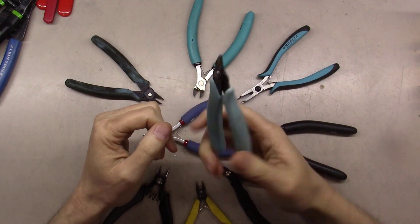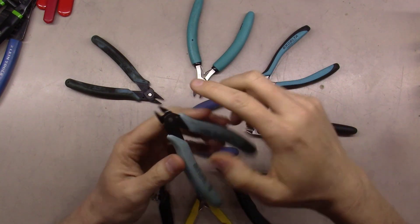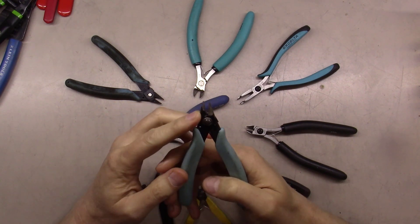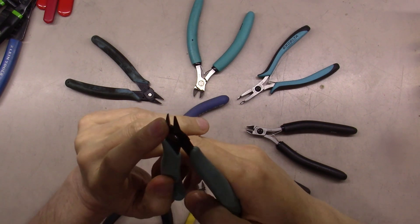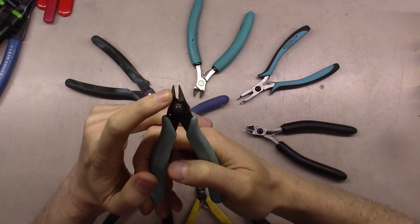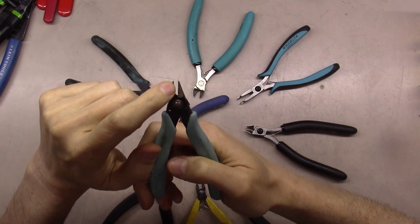You actually see these a lot on the used market. Matter of fact, at ham fests I'll see boxes of them. They're usually two or three dollars a pair. And what's happened is at some point in time, because they are stamped metal, they're not a hardened or forged steel, what'll happen right here is you'll get a ding in them.